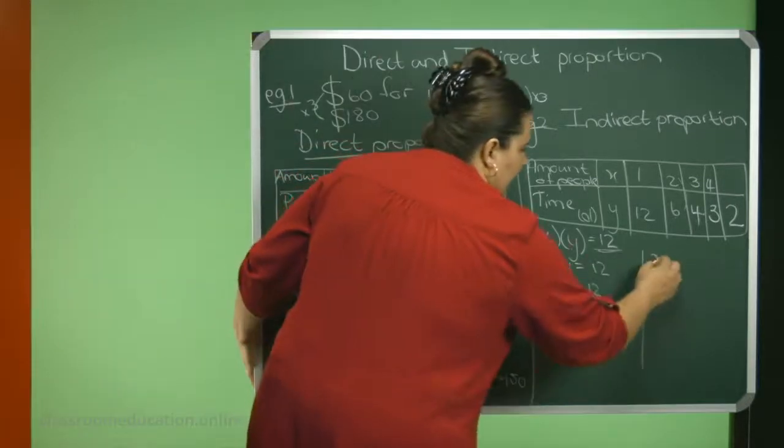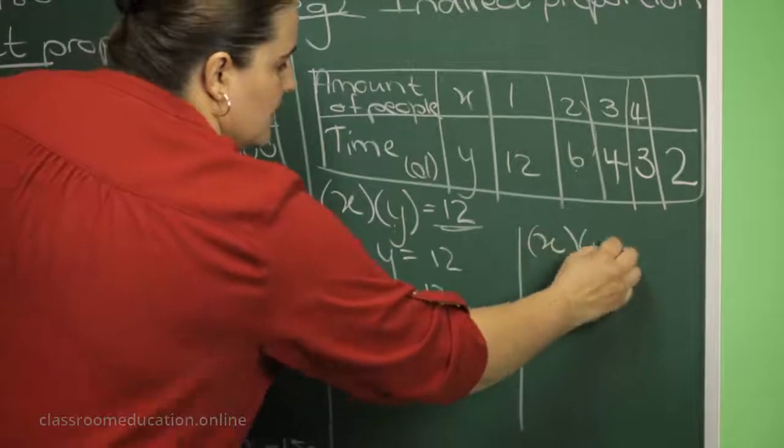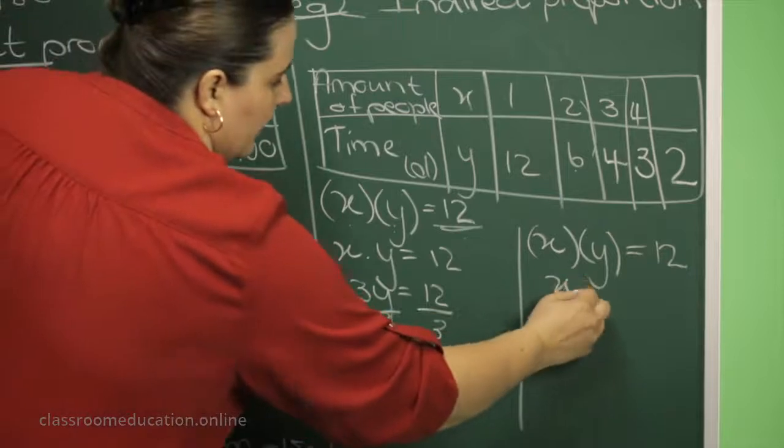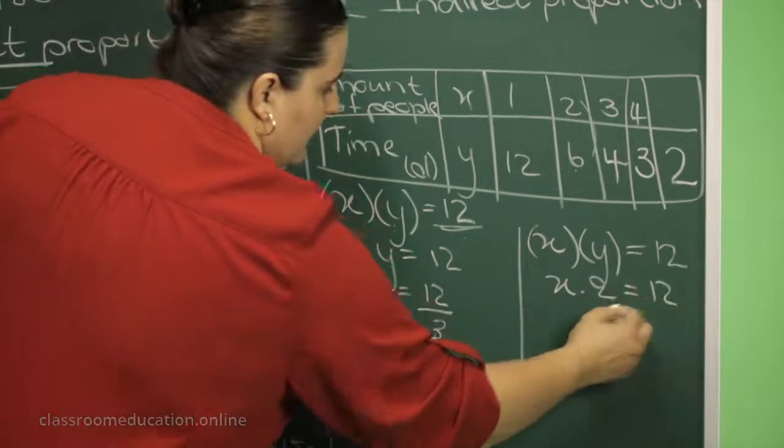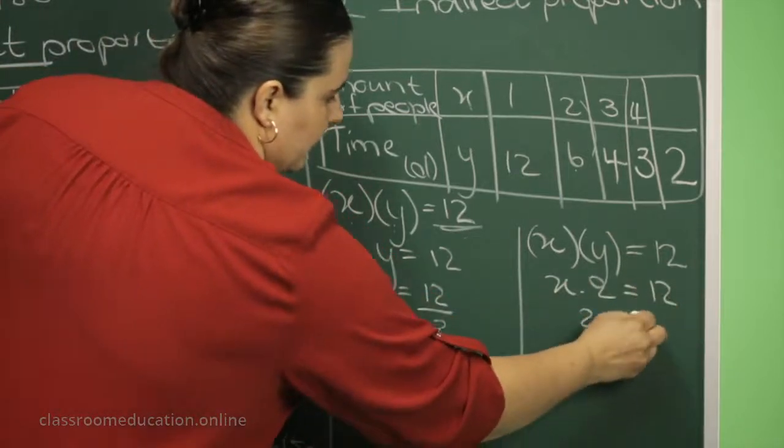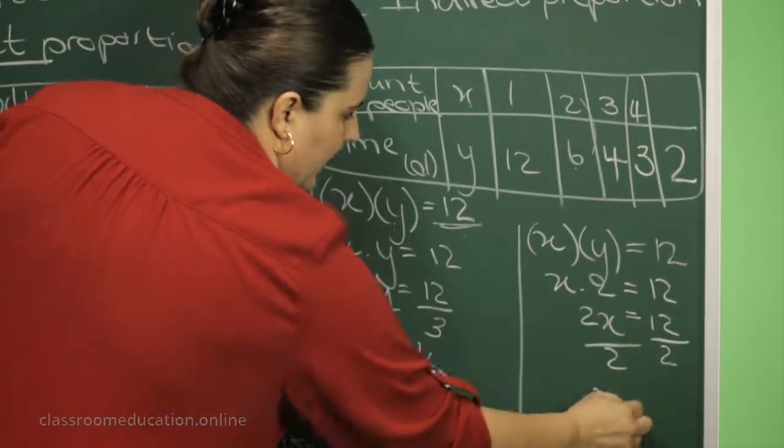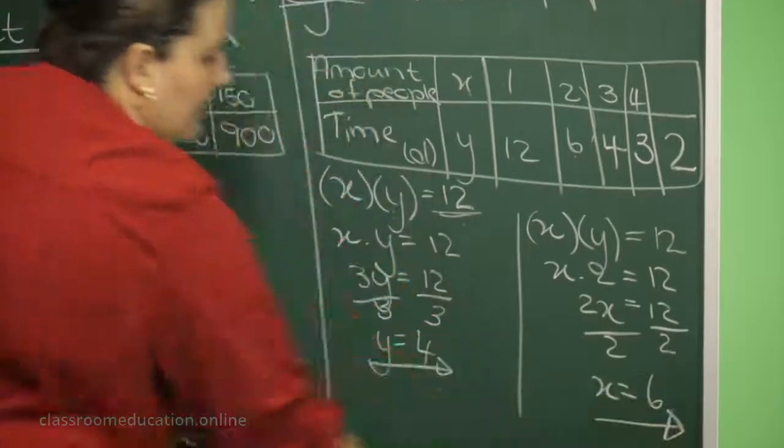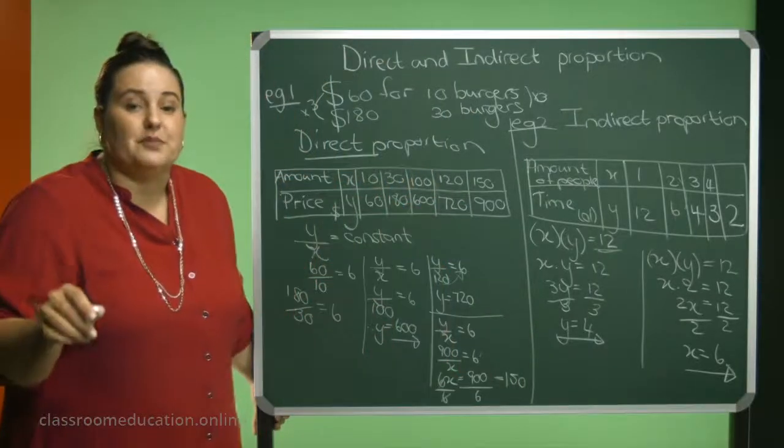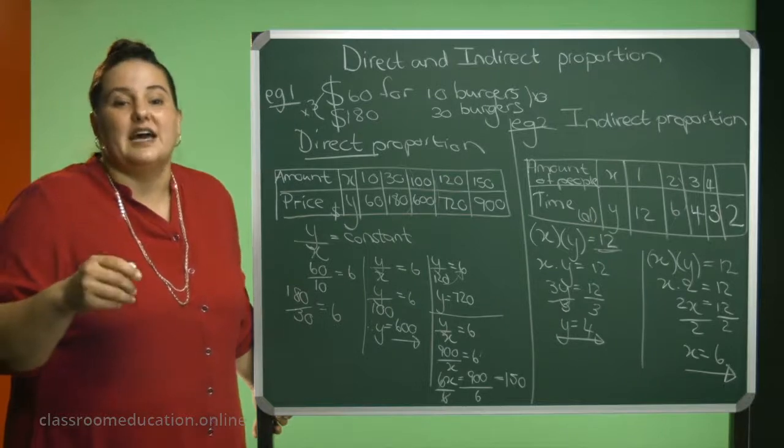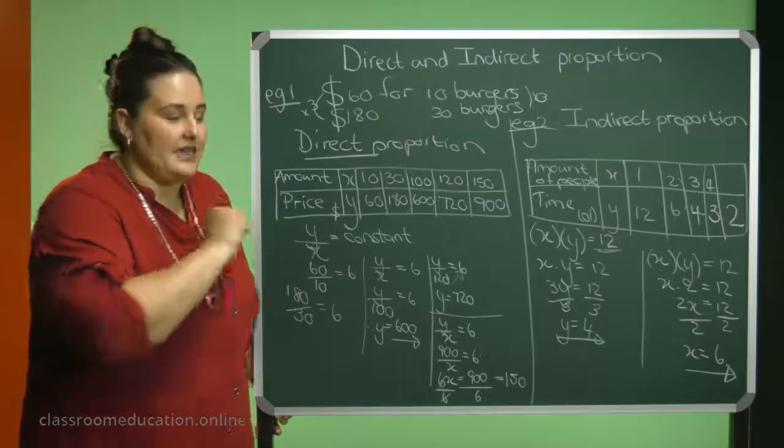I said that X times Y should give me a value of 12. My Y is 2, so X times 2 is 12. I'll rewrite it like this. And if you determine now your X, you will see that you need six people, or altogether you need to be six people, to paint the house in two days.